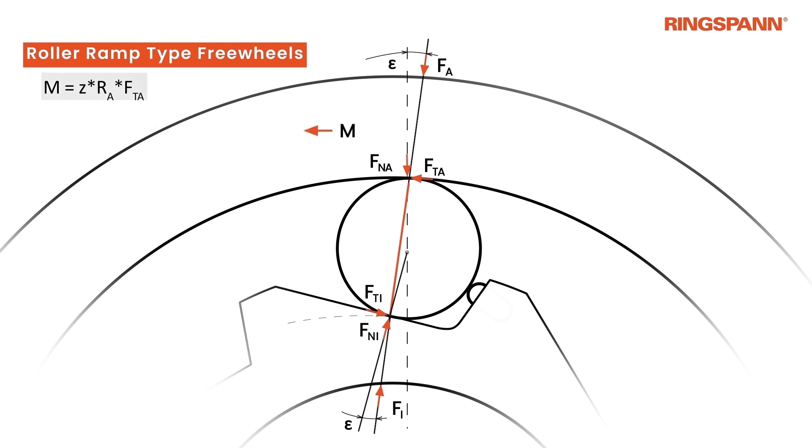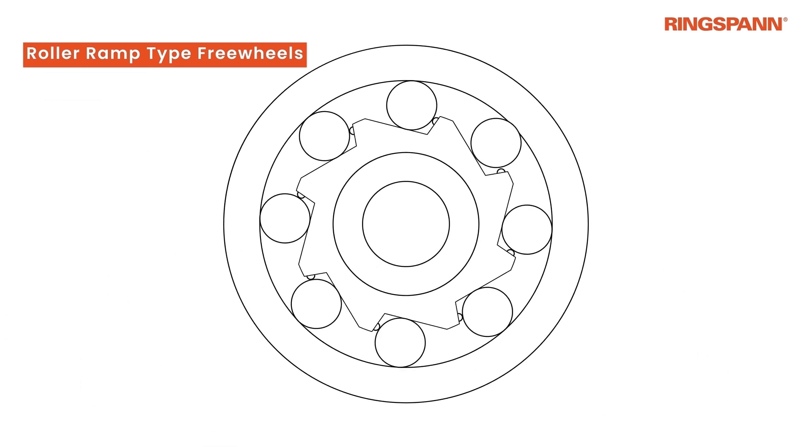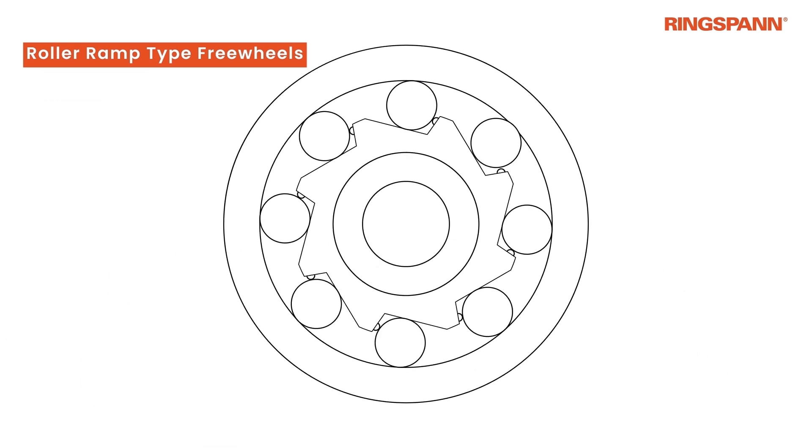The transmitted torque is again calculated as the product of the number of rollers, the radius of the cylindrical track, the normal force and the clamping angle. The clamping angles and forces automatically adapt to the applied torque. This is how friction-based freewheels work.